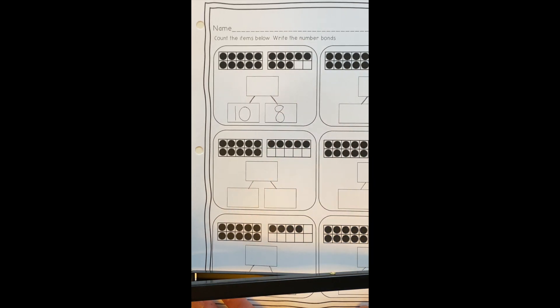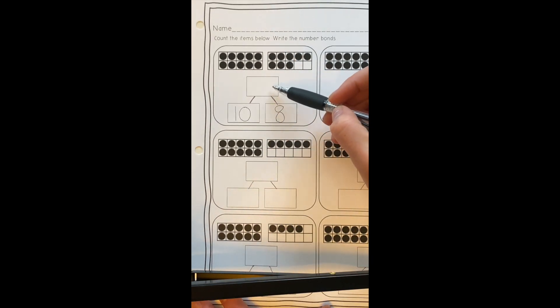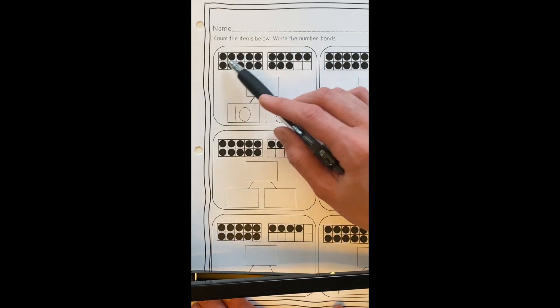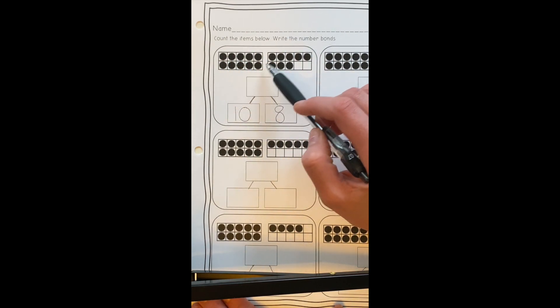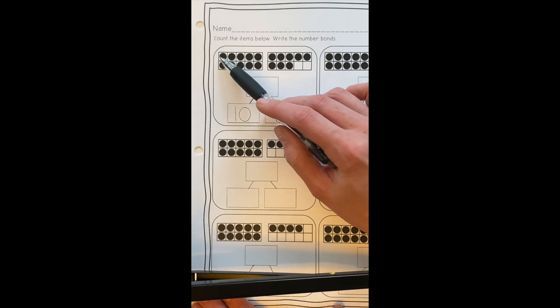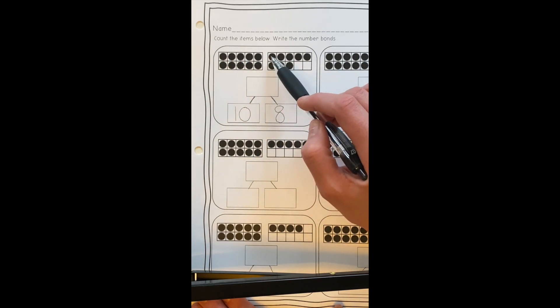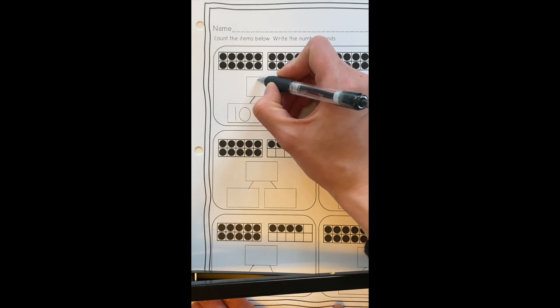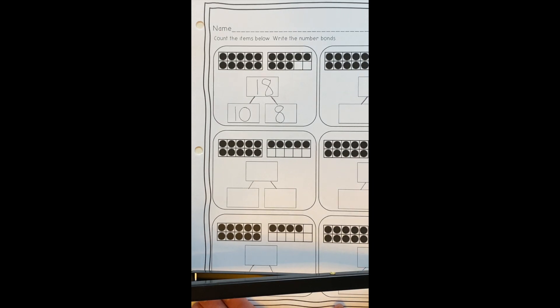So in this box, we're going to write our ones, which is our number eight. And then we need to find out our whole number. So we want to know how many we have all together. I can either say I know that ten and eight makes, or I can count all of my dots, or I can say ten, eleven, twelve, thirteen, fourteen, fifteen, sixteen, seventeen, eighteen. So our whole number is eighteen because we have eighteen dots all together.